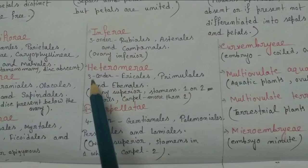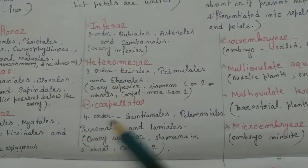Heteromerae is also divided into three orders: Ericales, Primulales, and Ebenales.